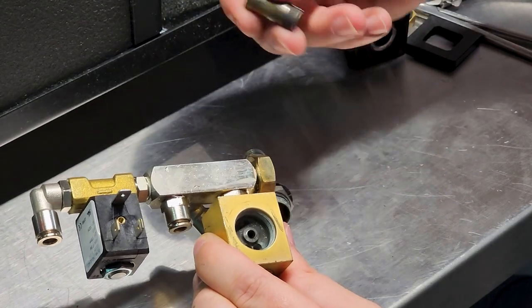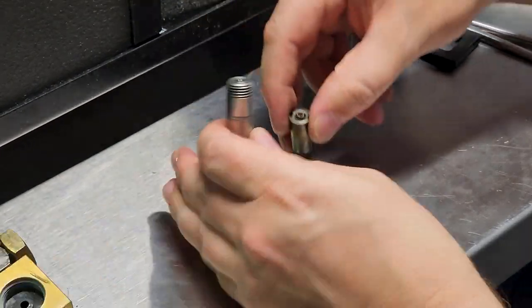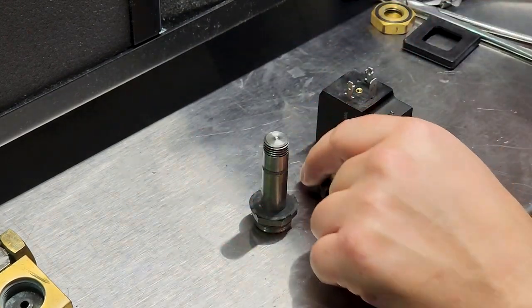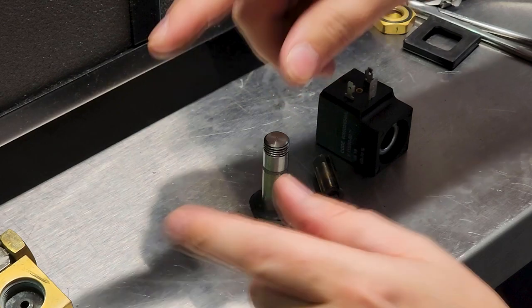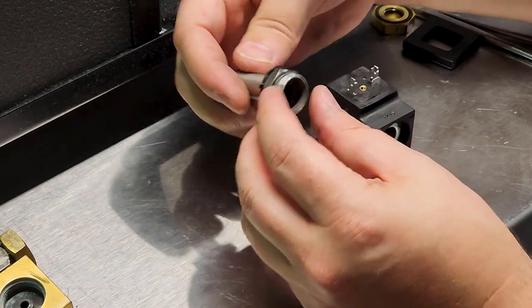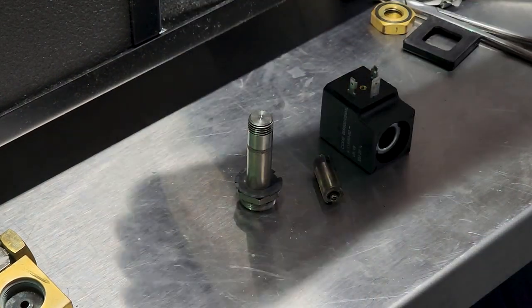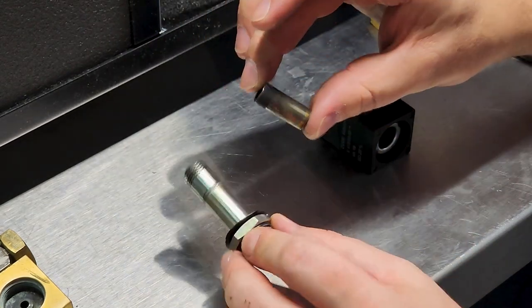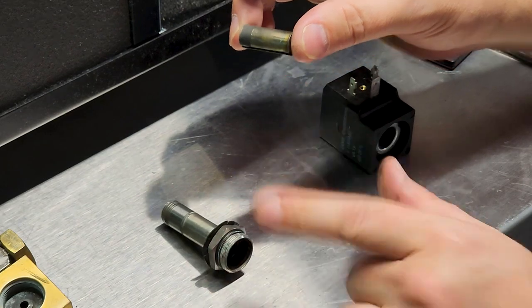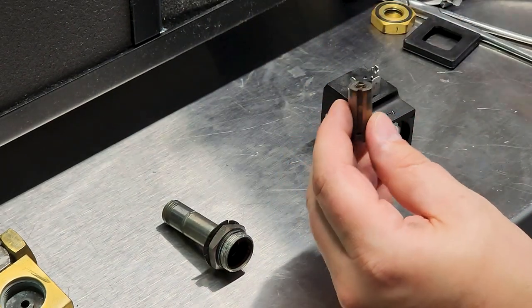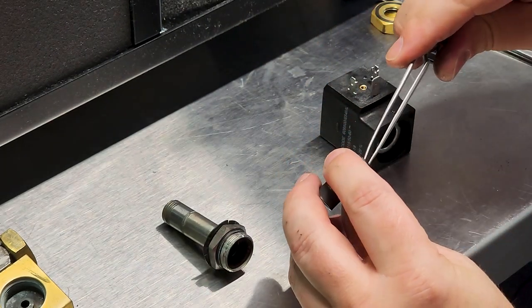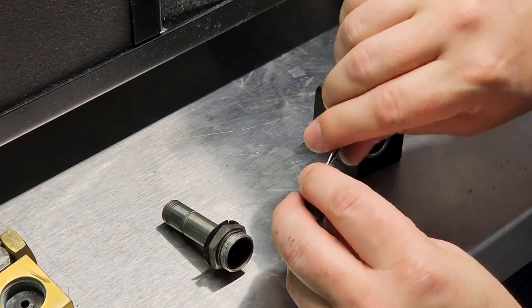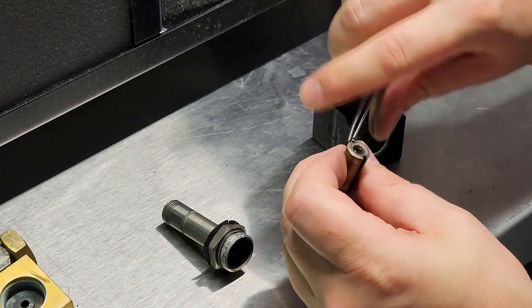These components right here are the rebuildable section of solenoids. Now you could change out the entire manifold and everything, but a lot of these guys for all different types of medical equipment are rebuildable in a kit. And in the kit you'll get that guy, you will get this guy right here, and there internally is going to be a little spring which returns it to its native position.